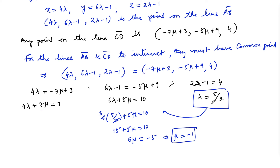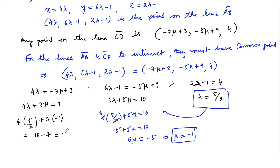Let us verify by substituting λ = 5/2 and μ = -1 into equation 1. LHS: 4 × (5/2) + 7 × (-1) = 10 - 7 = 3, which equals the RHS. So LHS = RHS, confirming our solution.